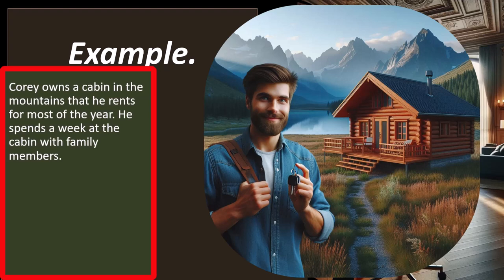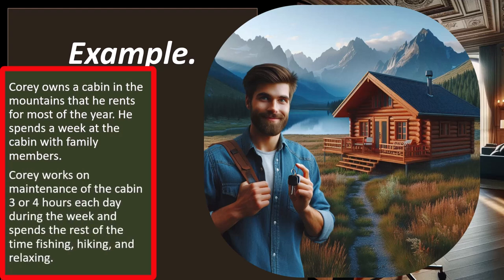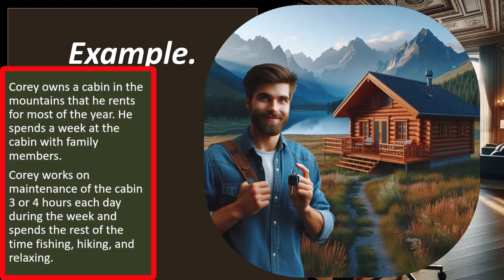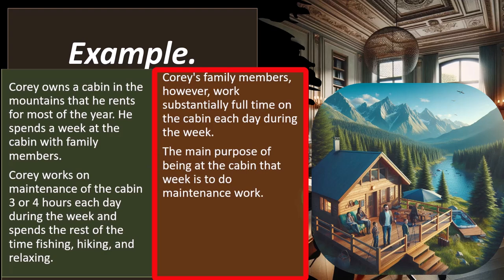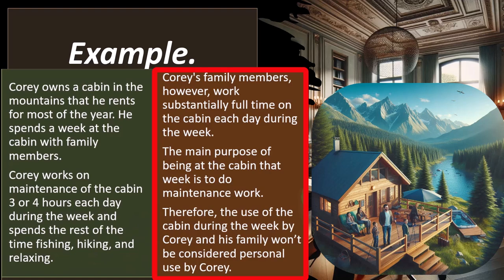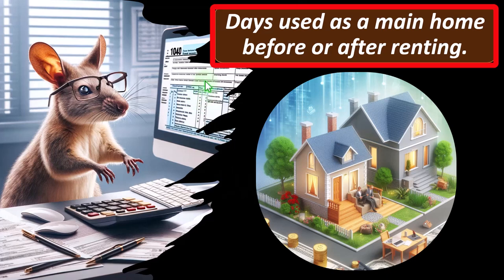Example: Corey owns a cabin in the mountains that he rents for most of the year. He spends a week at the cabin with family members, working on maintenance three or four hours each day and spending the rest of the time fishing, hiking, and relaxing. However, his family members work substantially full-time on the cabin each day during the week. The main purpose of being at the cabin that week is maintenance work — therefore, the use of the cabin during that week by Corey and his family won't be considered personal use by Corey.